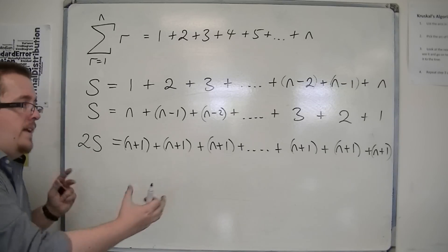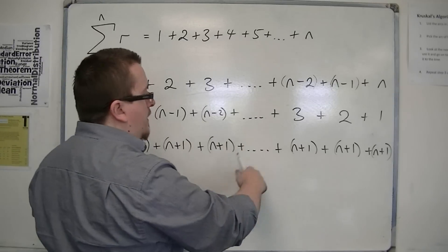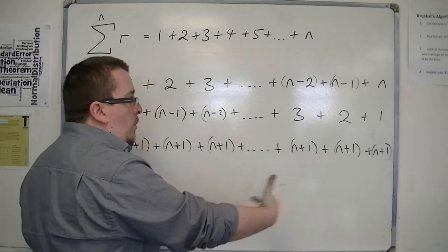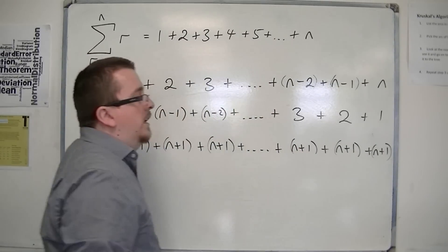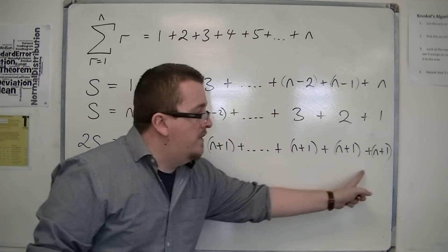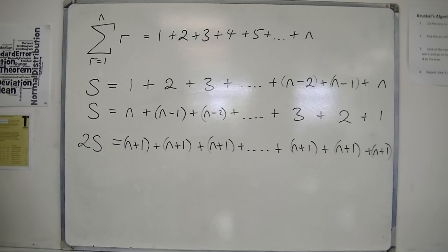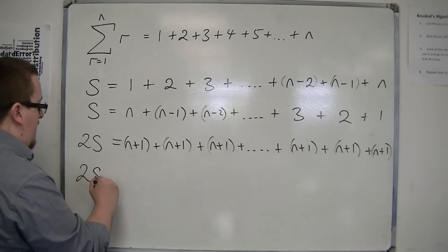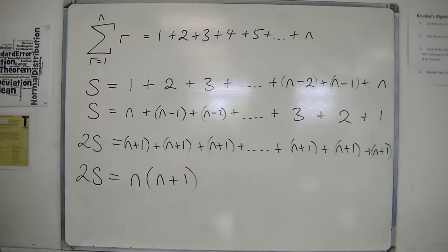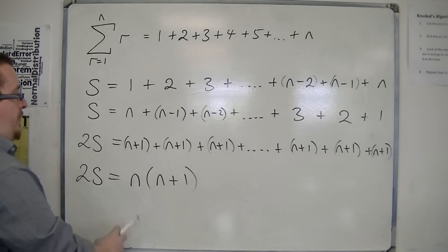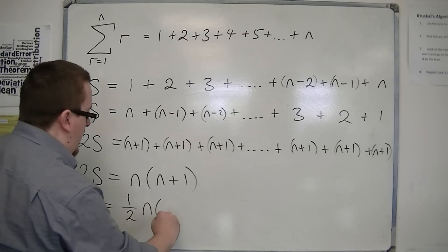How many terms do I have? Well, I've got 1, 2, 3, 4, 5, 6, 7, and so on, up to n minus 2, n minus 1, n. So I've got n terms — n lots of n plus 1. If I divide both sides by 2, the sum S equals one half n times n plus 1.